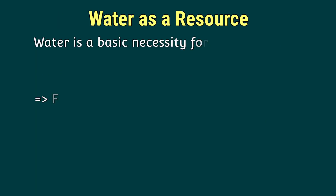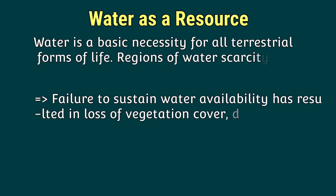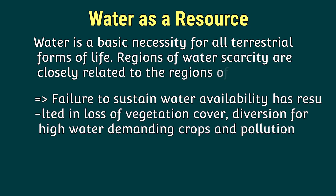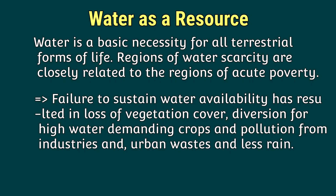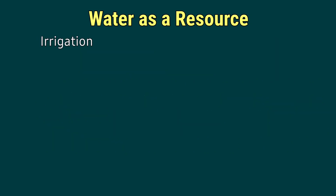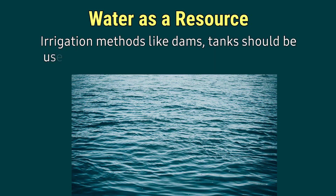Water as a resource: water is a basic necessity for all terrestrial forms of life. Regions of water scarcity are closely related to regions of acute poverty. Failure to sustain water availability has resulted in loss of vegetation cover, diversion for high water-demanding crops, and pollution from industries, urban waste, and rain. Irrigation methods like dams and tanks should be used in various parts of India.